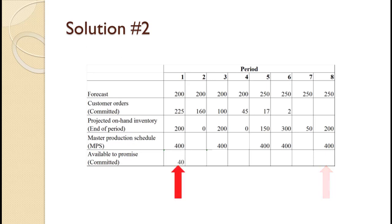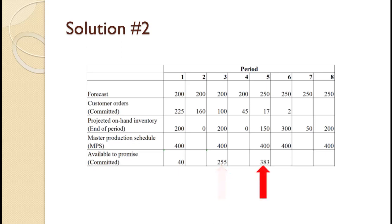We have beginning inventory of 25 plus 400 production for a total of 425. We have committed orders of 225 plus 160 equals 385, giving available to promise of 425 minus 385 equals 40. For period 3, production of 400 minus committed orders of 100 plus 45 equals 145, giving available to promise of 255. For period 5, 400 minus 17 equals 383 available to promise. For period 6, 400 minus 2 equals 398 available to promise. For period 8, all 400 being produced are available to promise.